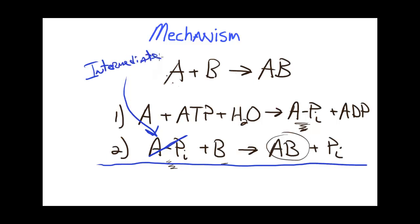In other words, it's produced then consumed, that's why we call it an intermediate. We'll cancel that out and if I add down now, I will get the same overall reaction, which is A plus B plus ATP plus water goes to AB plus ADP plus the phosphate group.